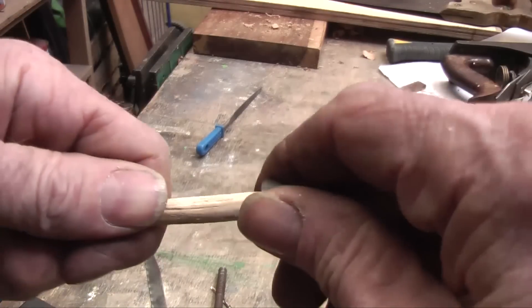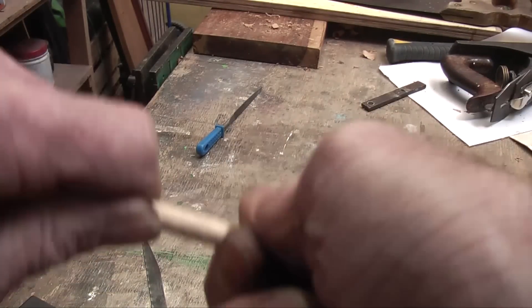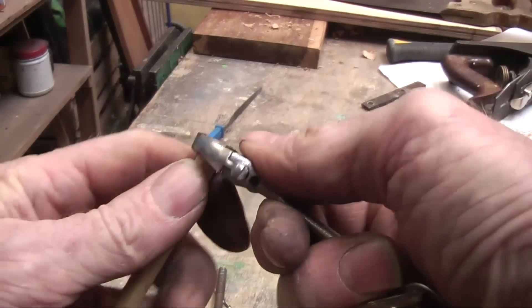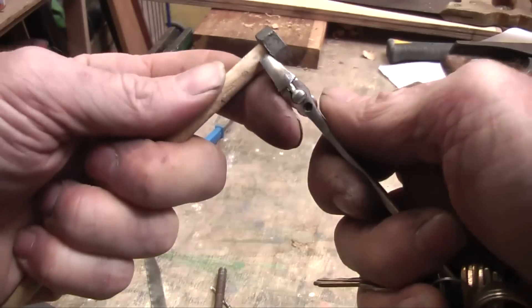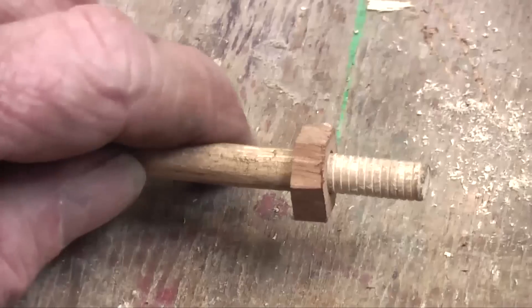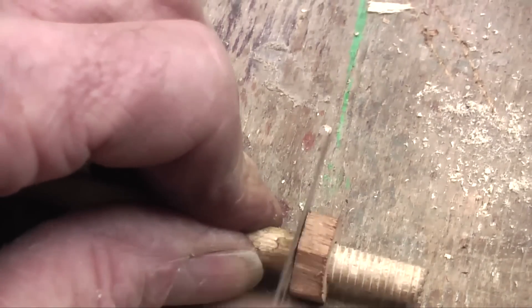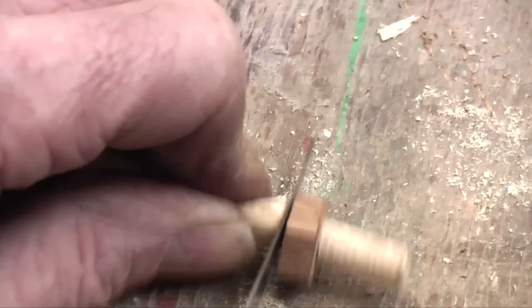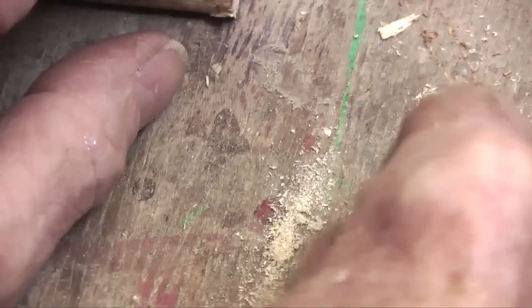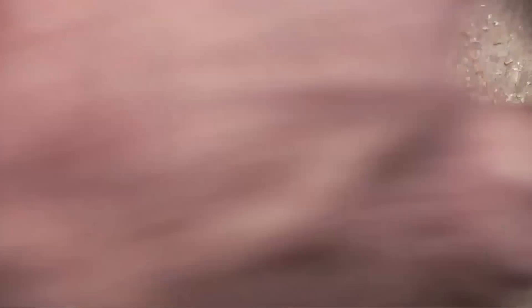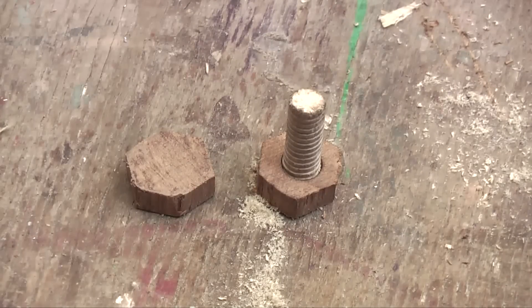So now when you put that real nut on there and screw it round, and you may need the assistance of a small spanner. And then you can cut that off. And there you have a nice bolt with thread on it as well to go with your nut on the other side.